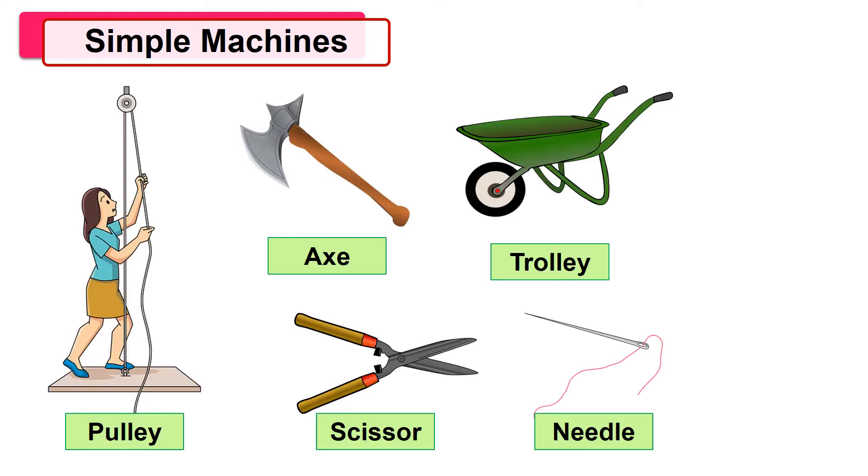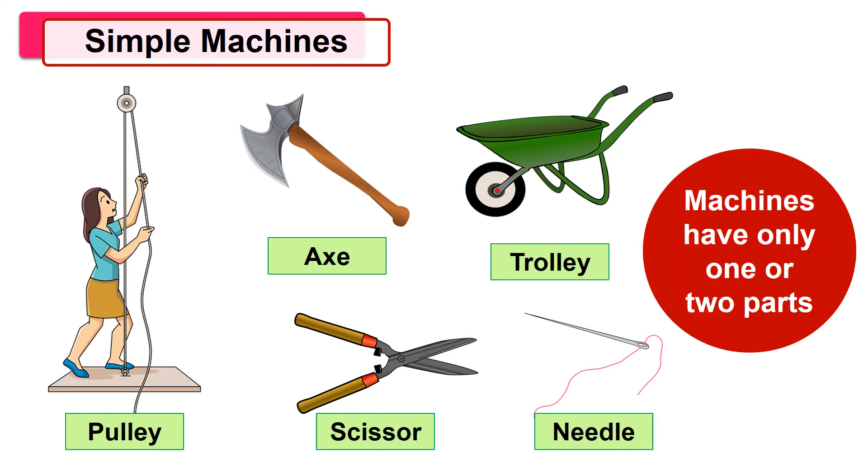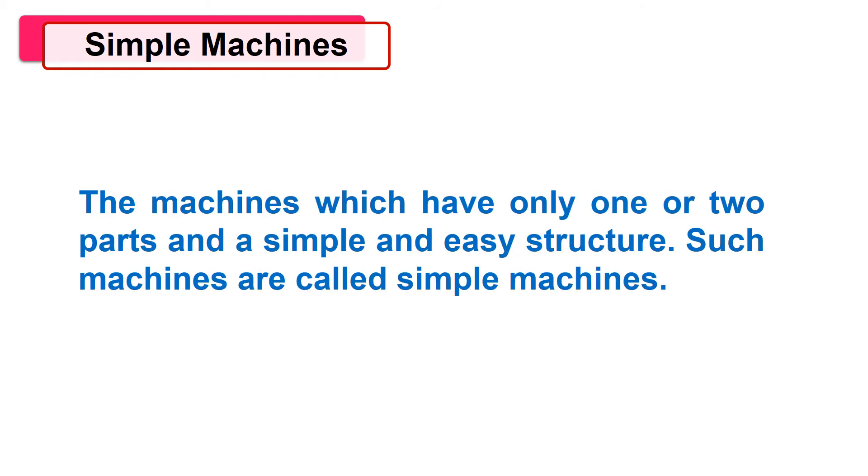Let's study simple machines. In the given pictures, how many parts do the machines consist of? Here we can see the pulley has two parts, the stand and the wheel. The axe has two parts, axe head and wooden handle. The scissor has two parts, handle and blades. The trolley is composed of two parts, a wheel and container, and the needle has only one part. If we observe these pictures, we can see that the machines shown have only one or two parts. From this, we will define simple machines. The machines which have only one or two parts and a simple and easy structure. Such machines are called simple machines.